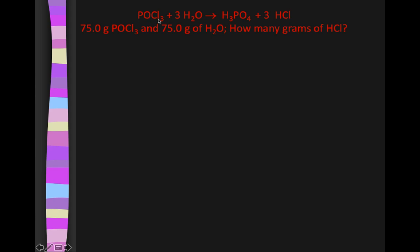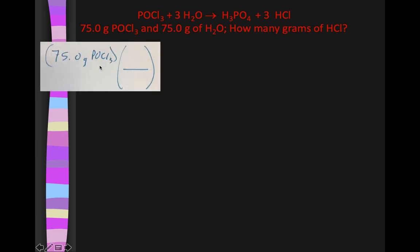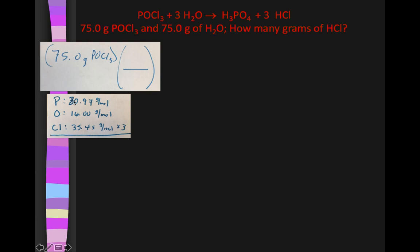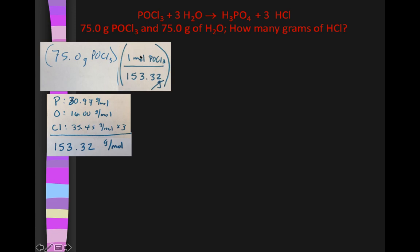These are our givens. Here's the balanced equation. 75 grams POCl3, 75 grams of water. How many grams of HCl? Let's plan our work. I'm starting with POCl3, and I'm being asked about HCl. That makes this a stoic problem. So that means I have to get my given into moles so I can do the mole ratio switchover step. Let's start with 75 grams of POCl3. I need to get to moles of POCl3 so that I can do the mole ratio and switch chemicals. So I need the molar mass of POCl3. I add it up from the periodic table. P is 30.97, O is 16.00, Chlorine times 3, 35.45. Add that all up: 153.32 grams per mole.